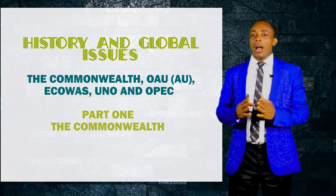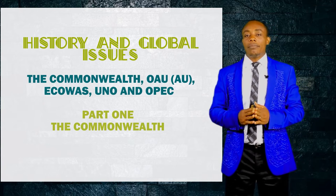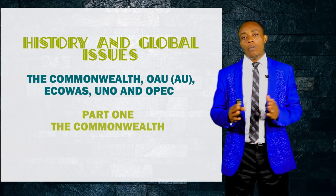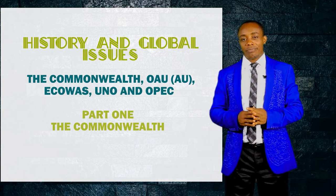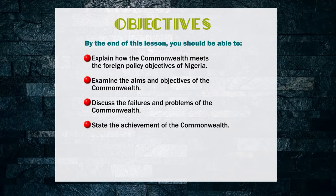Part 1 is the Commonwealth in the theme of history and global issues. By the end of this lesson you should be able to explain how the Commonwealth meets the foreign policy objectives of Nigeria, examine the aims and objectives of the Commonwealth, discuss the failures and problems of the Commonwealth, and lastly, state the achievements of the Commonwealth.